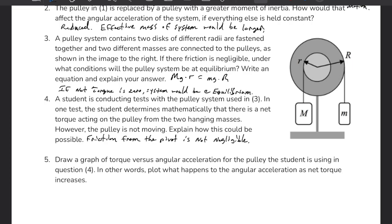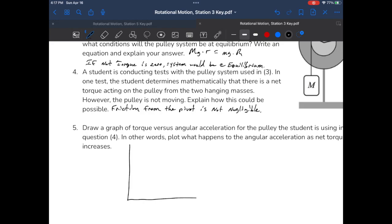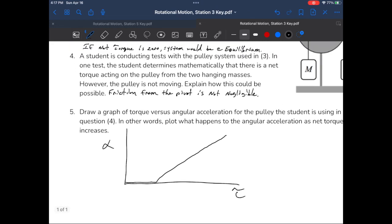Draw a graph of torque versus angular acceleration for the pulley. So our graph is going to have acceleration on the vertical axis. We'll put torque down at the bottom on the horizontal axis. As torque is increasing initially, angular velocity is not increasing. But once you break free of the static friction, then you're going to see that linear relationship between the two.